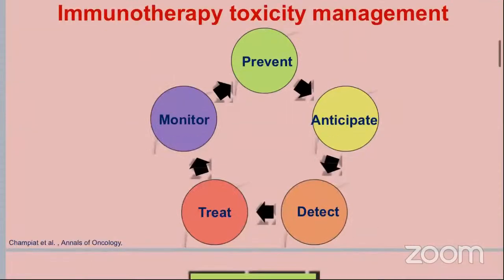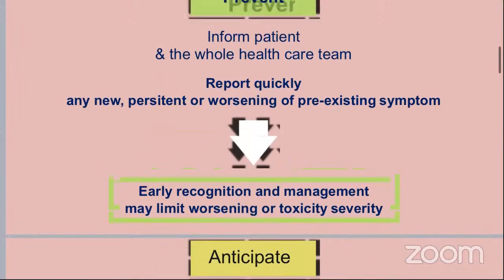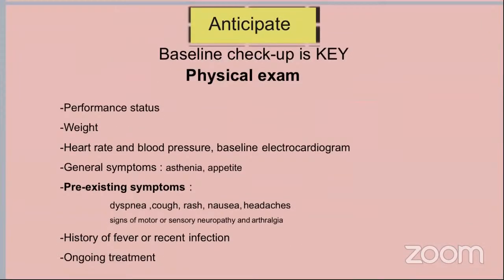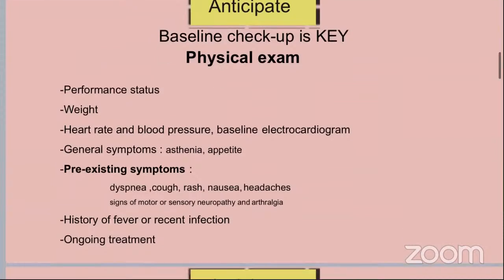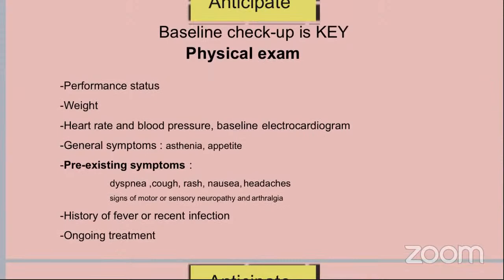Management includes how to prevent, anticipate, detect, treat, and monitor. Prevention involves informing the patient and the whole healthcare team, and reporting quickly any new, persistent, or worsening pre-existing symptoms. Early recognition and management may limit worsening or toxicity severity. Anticipation requires baseline checkup through physical examination and routine lab workup. Every visit, we should assess performance status, weight, heart rate, and blood pressure with baseline echocardiogram, and assess general symptoms such as asthenia or change in appetite, as well as pre-existing symptoms like dyspnea, cough, rash, nausea, and headache.